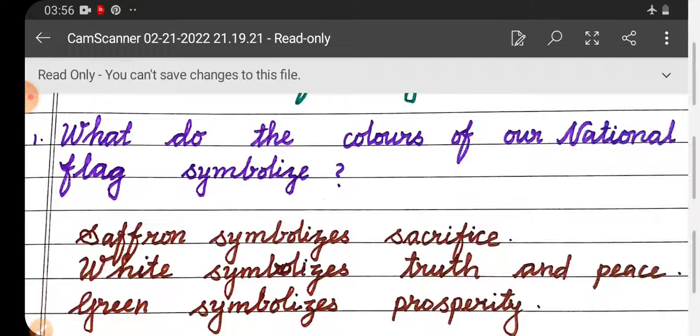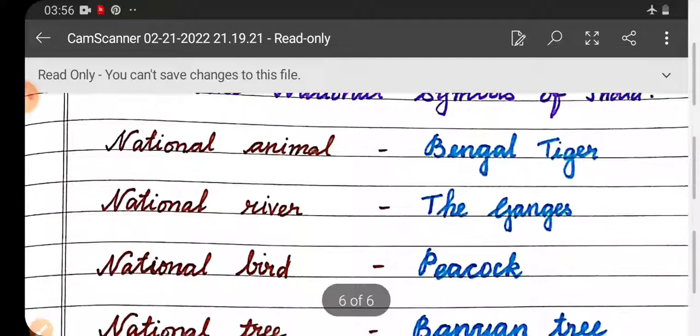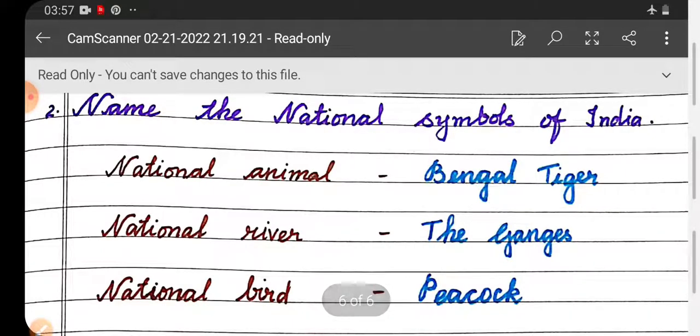Second one: Name the national symbols of India. National animal: Bengal Tiger. National river: The Ganges. National bird: Peacock.